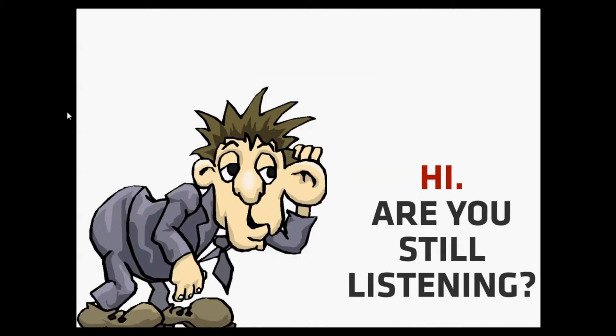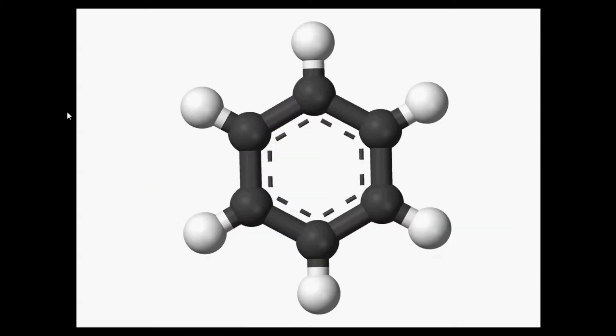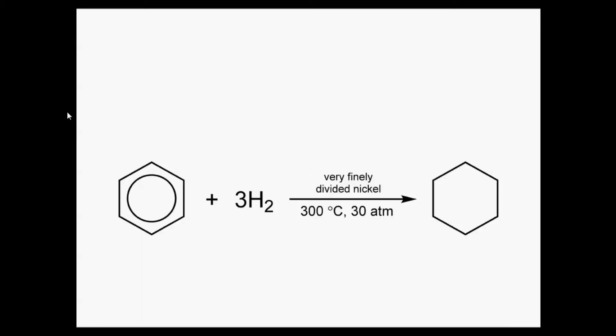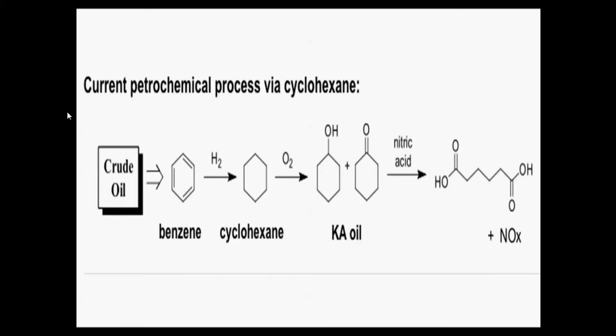So, how do you produce adipic acid? Before talking about the biotechnology used to produce this acid, let me explain the conventional way of producing it. Benzene obtained from crude oil is hydrogenated to produce cyclohexane as a first intermediate. Cyclohexane is then oxidized to produce KA oil as a second intermediate, and KA oil is reacted with nitric acid to form adipic acid, with nitric oxides as a byproduct.